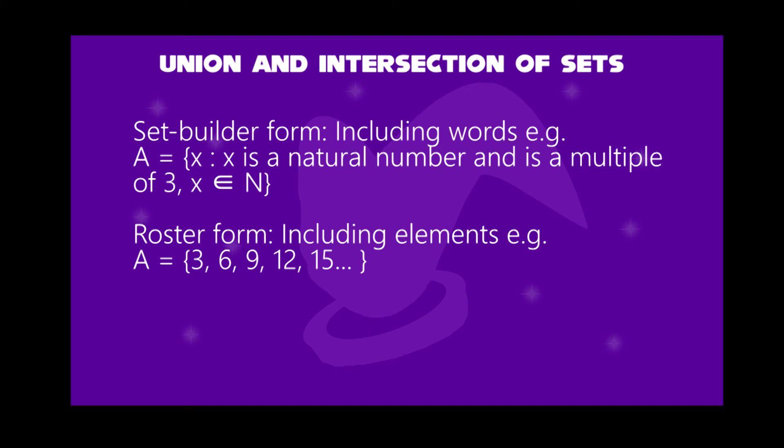For example, X is a natural number such that X is a multiple of 3, where X belongs to natural number N. Writing in roster form, the elements will contain multiples of 3, like 3, 6, 9, 12 and so on. You can find any other example like factors of 10, prime numbers less than 10 and others.